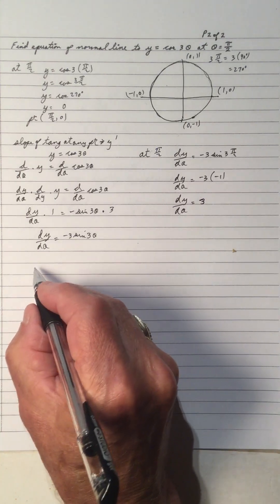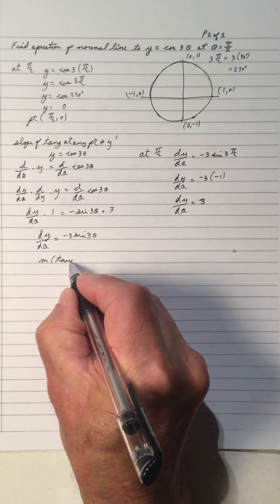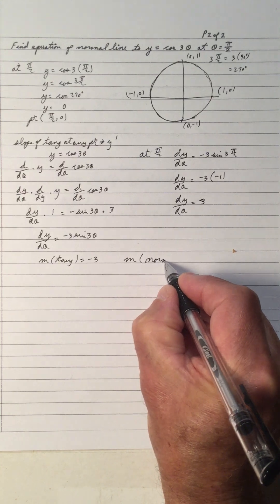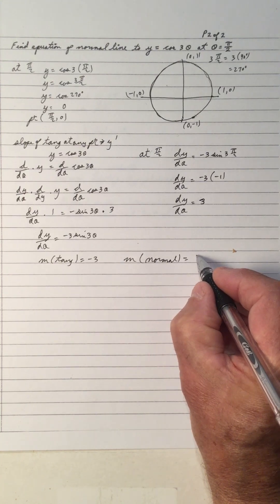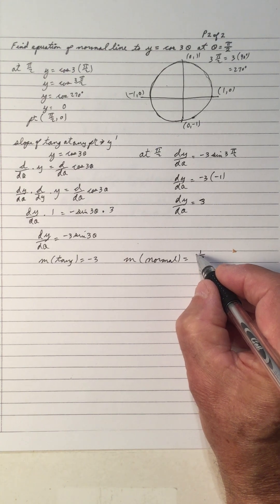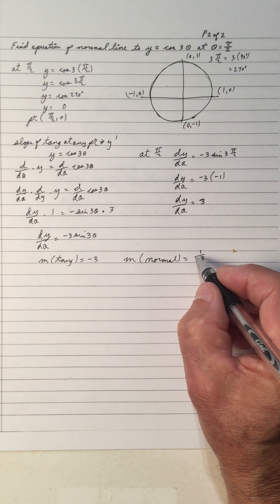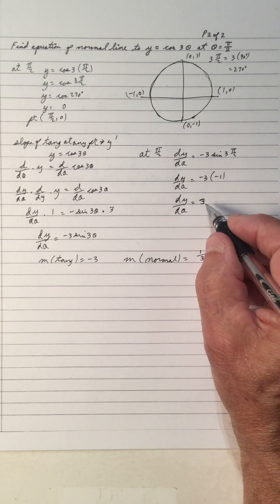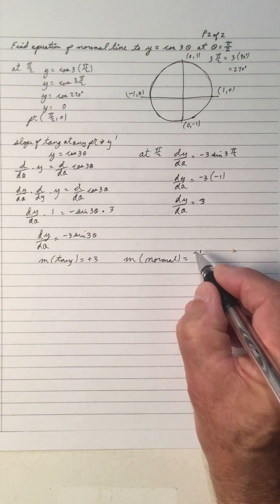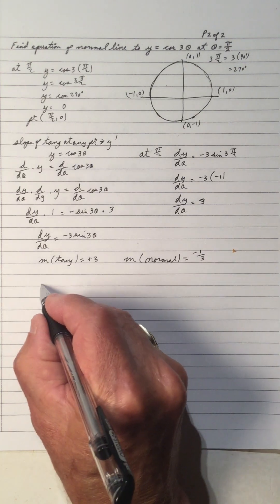As a result, the slope of the tangent, which is y prime, is positive 3. The slope of the normal line is the negative reciprocal. The reciprocal of 3 is 1/3, and we take the opposite sign, so the slope of the normal is negative 1/3.